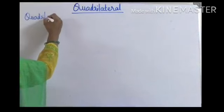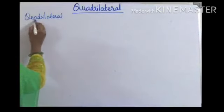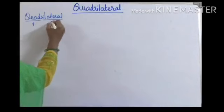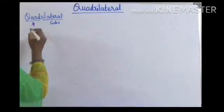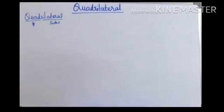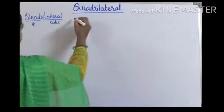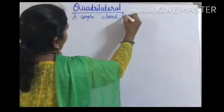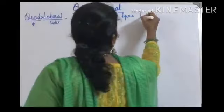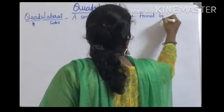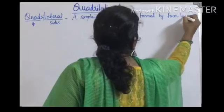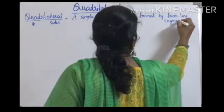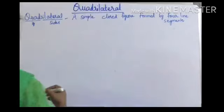In the name itself we have the word 'quad' — quad means 4, and lateral means sides. So a figure with 4 sides, that is a simple closed figure formed by 4 line segments, is known as a quadrilateral.